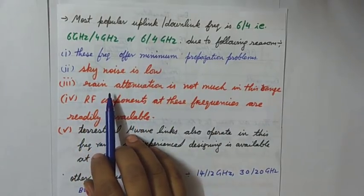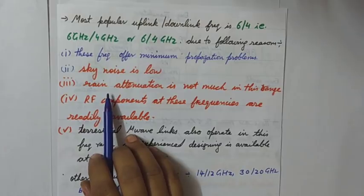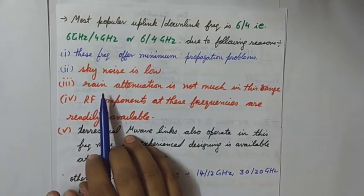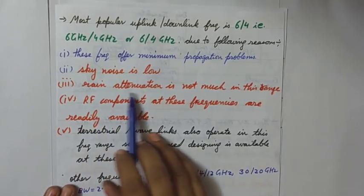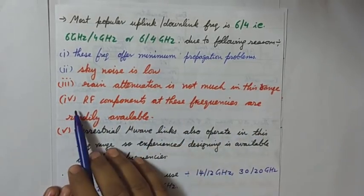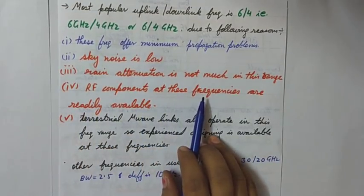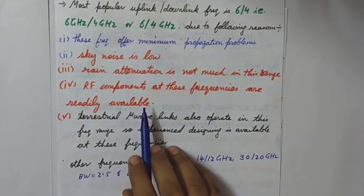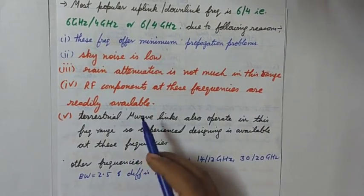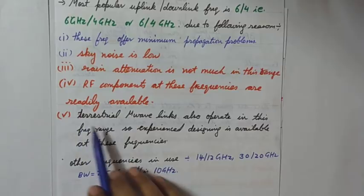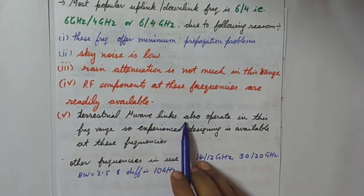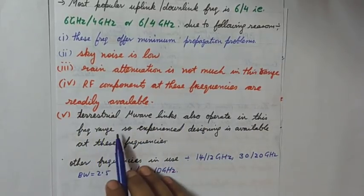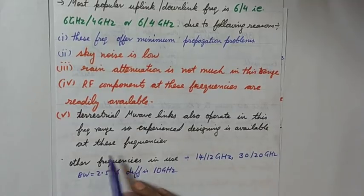Third, the rain also attenuates the signal very much but in this range the rain attenuation is not much. Also, the RF components at these frequencies are readily available in the market, no need of specialization further because they are already in the market. And fifth point is that the terrestrial microwave links also operate in this frequency range and so experience in designing is available at these frequencies.